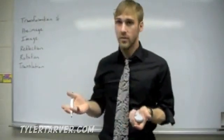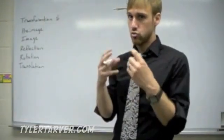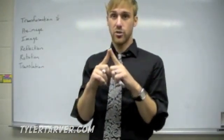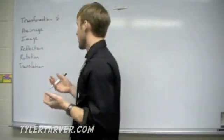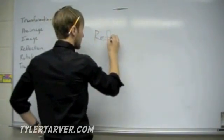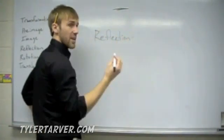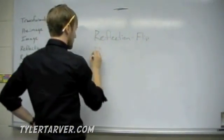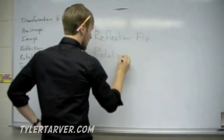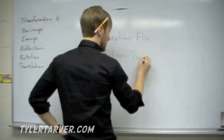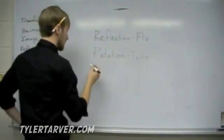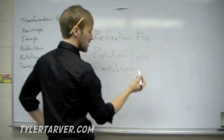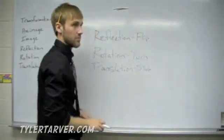To review what we went over today: a transformation is any change, like Transformers. The pre-image is the shape before it gets moved or changed, and the image is what it looks like afterwards. The three types are: reflection — another word is flip, you flip it over a line; rotation — another word is turn, you turn it on the coordinate plane; and translation — you just slide it. That's it!